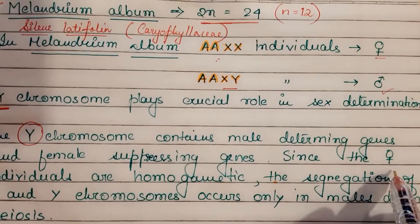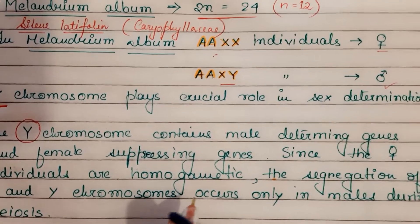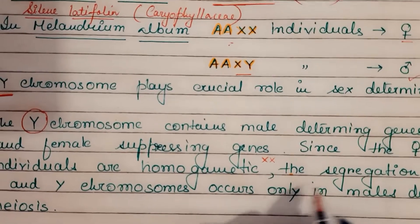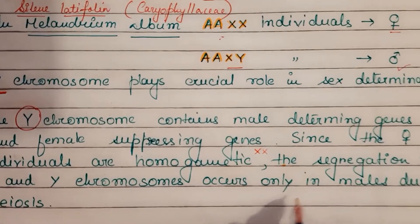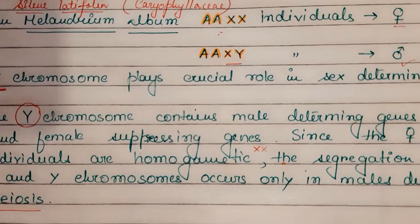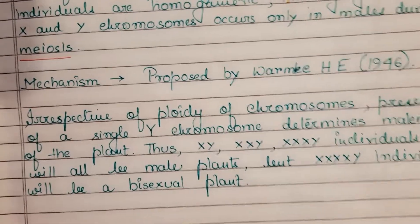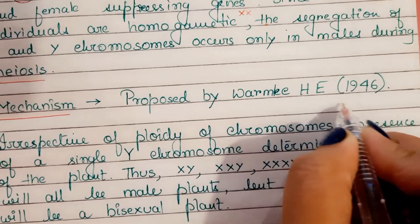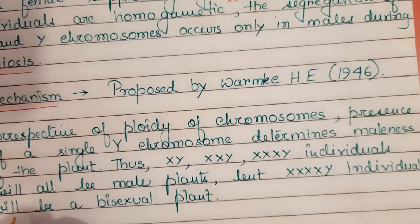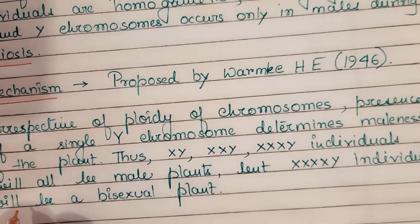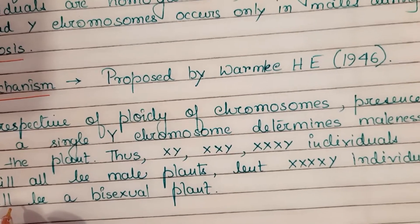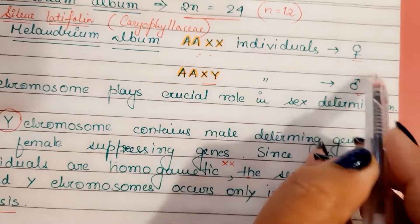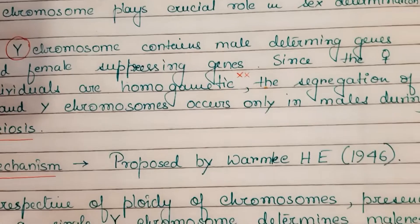Since the female individuals are homogametic, meaning XX are present, the segregation of X and Y chromosome occurs only in males during meiosis. This mechanism was proposed by Warmke and Blakeslee in the year 1946. As we have already mentioned, XX individuals will be females and XY individuals will be males.